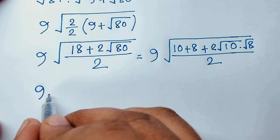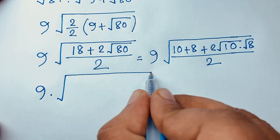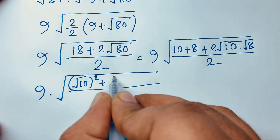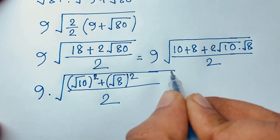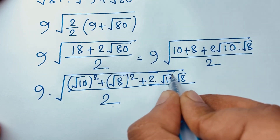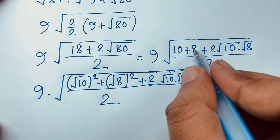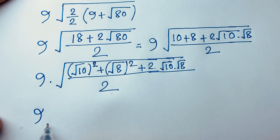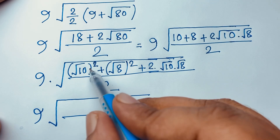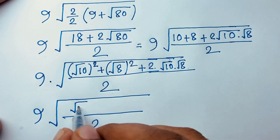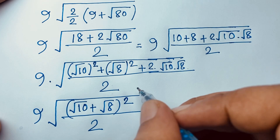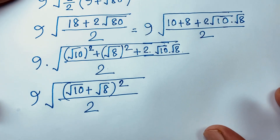Here is 9 times square root of (square root 10 whole squared plus square root 8 whole squared plus 2 times square root 10 times square root 8). The square roots cancel to give 10 and 8. Thinking of this as a and b, this is a² + 2ab + b² = (a + b)², so it will be (a + b) whole square.